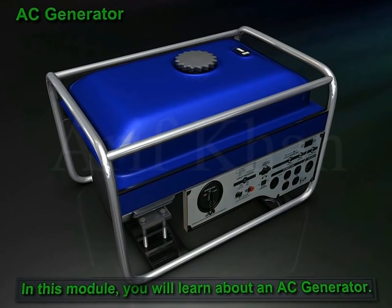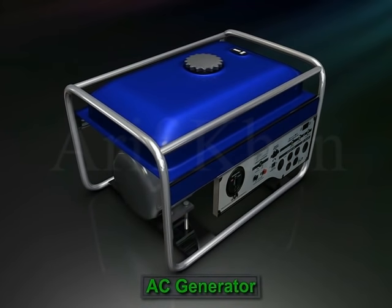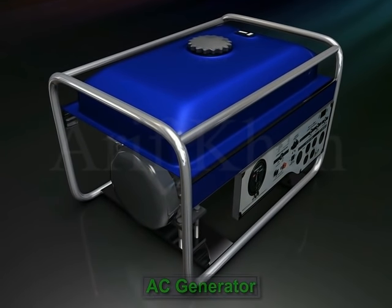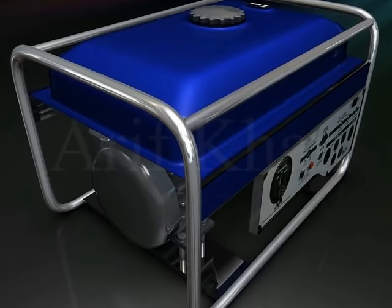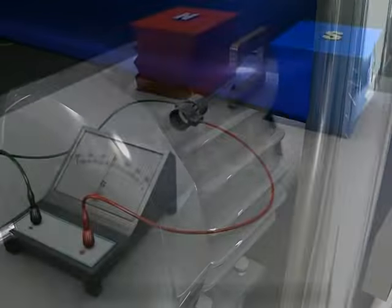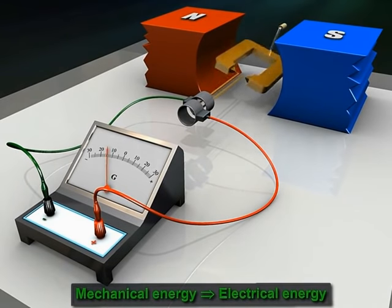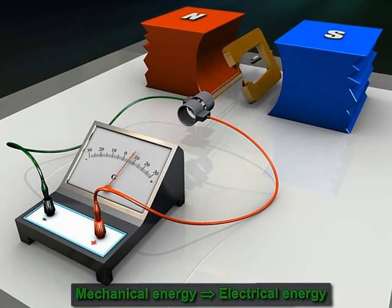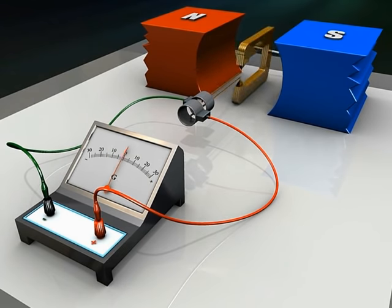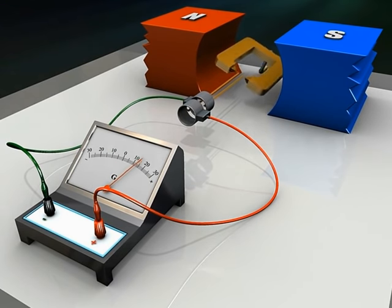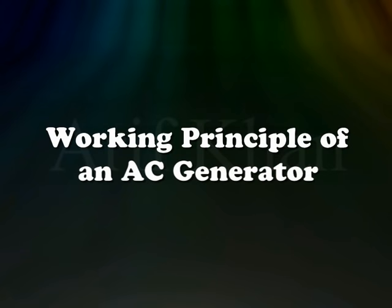In this module you will learn about an AC generator. An AC generator is an electric generator that converts mechanical energy to electrical energy in the form of an alternating EMF or alternating current.